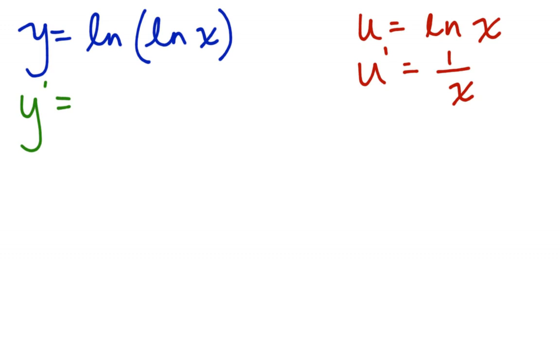Y prime is equal to ln of u. Well, I know that the derivative of ln, y prime is equal to u prime over u. So, let's rewrite. U prime is 1 over x, and u is ln x.